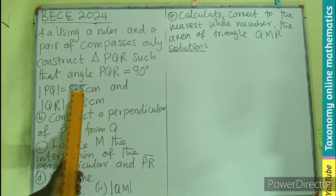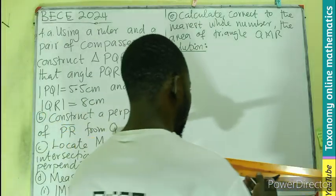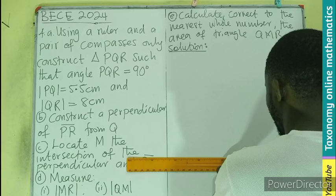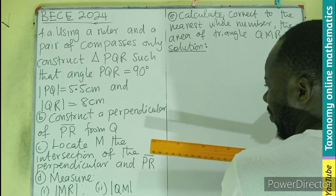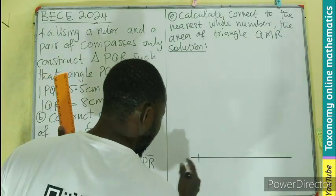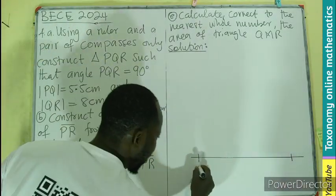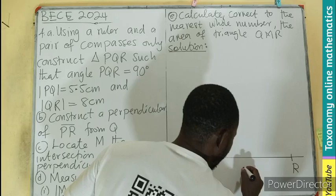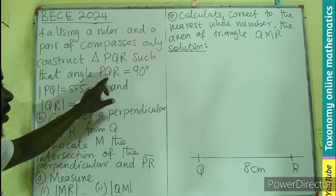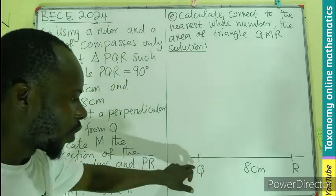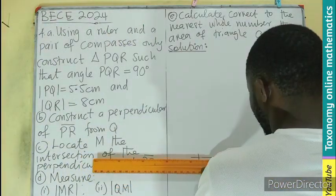The angle at Q is 90°, so I'm beginning with QR as 8 centimeters. We have our line segment, then I measure 8 centimeters — so this is going to be our QR. With the 8 centimeters, we have an angle of 90° exactly where Q is, so I'm going to construct 90 degrees.